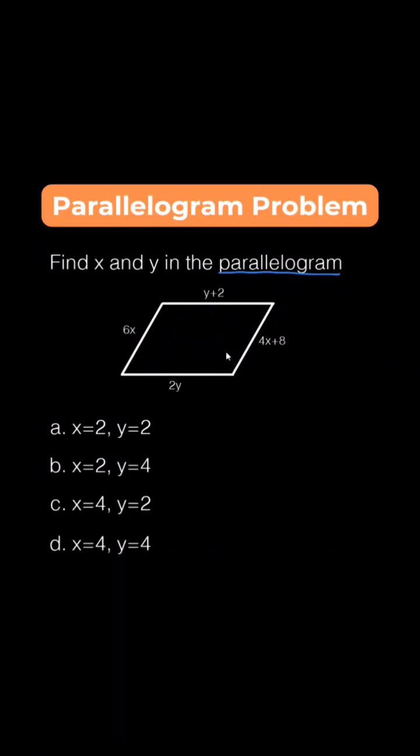So first, we note that y plus 2 is equal to 2y, so we have 2y equals y plus 2, subtract y both sides and we obtain y equals 2.